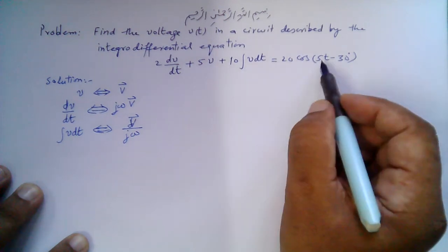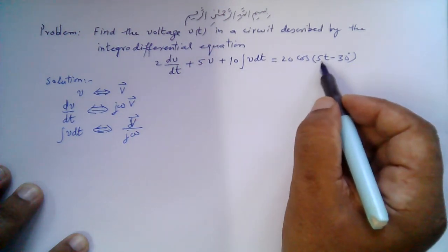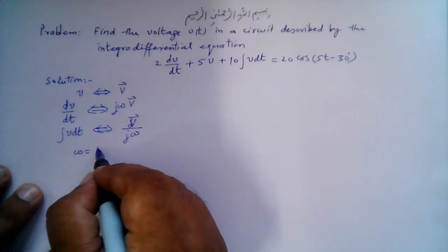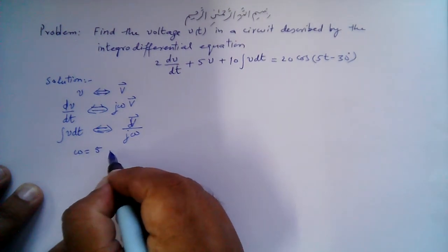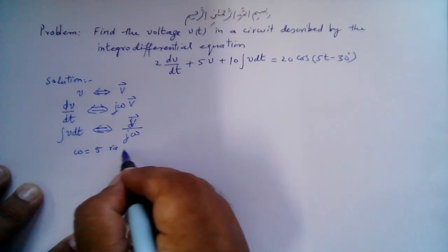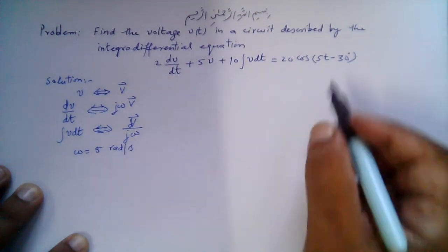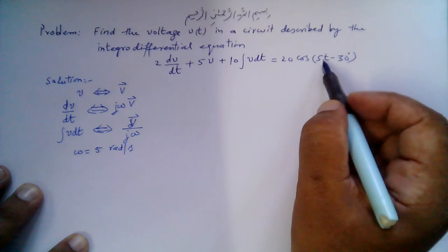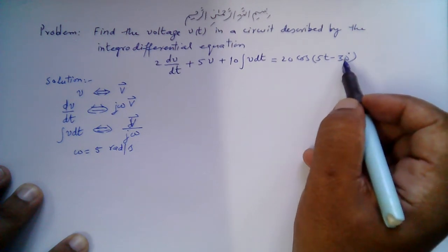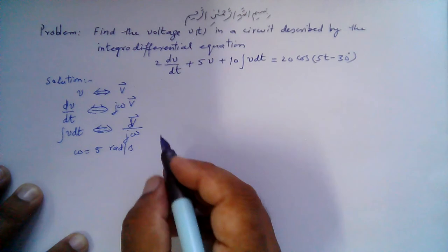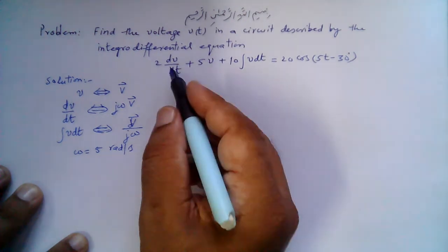Before transforming, note that ω equals 5 radians per second, since this is ωt in the cosine. The phase is minus 30 degrees.